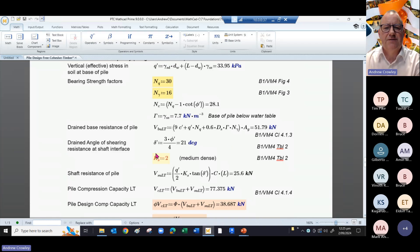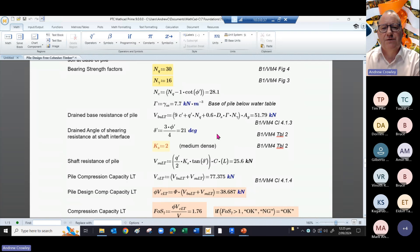We're assuming the drained angle of shear resistance at the shaft interface delta is 21 degrees, simply by taking 75 percent of the angle of shearing resistance. We've got a Ks factor which varies depending on the density of the soil you're in and the type of pile you're using.